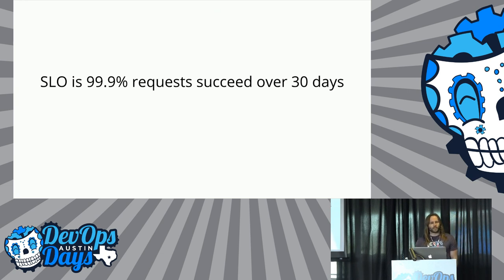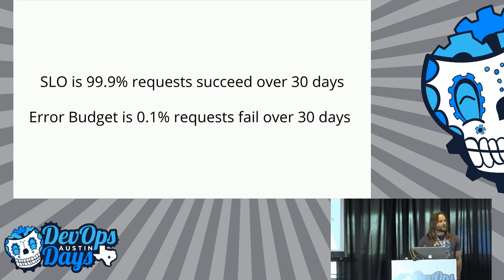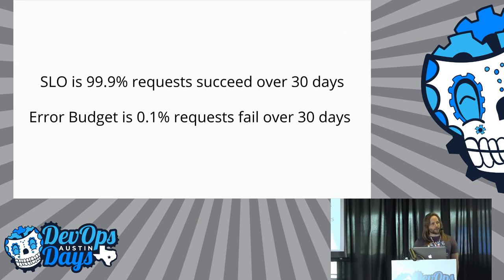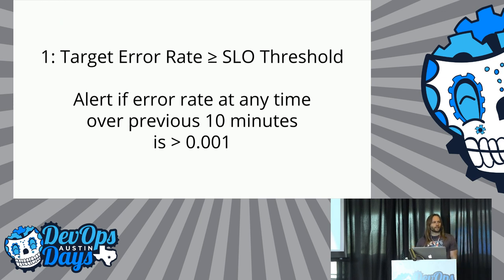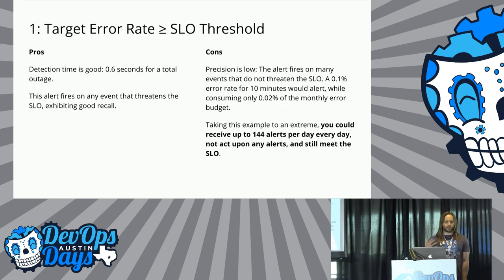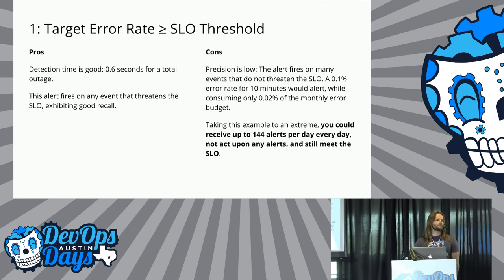For our running example, we will assume the SLO is 99.9% requests succeed over 30 days. This SLO implicitly defines an error budget of 0.1% — requests are allowed to fail over 30 days. For the first method, target error rate: we choose a small time window, for example 10 minutes, and alert if the error rate at any time during the window exceeds the SLO threshold. The highlight con is that you can receive up to 144 alerts per day, every day, and not act on it and still meet the SLO.